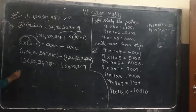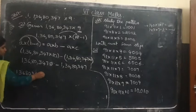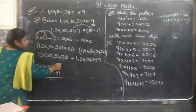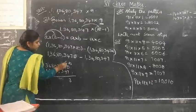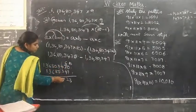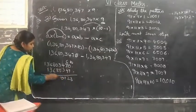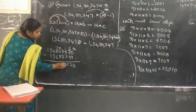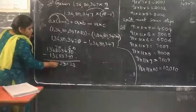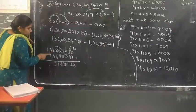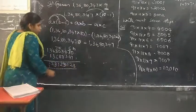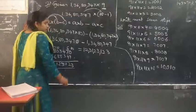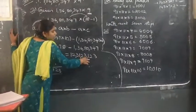Now subtract these two values: 13,68,03,470 minus 1,36,80,347. Working through: 10 − 7 = 3; 6 − 4 = 2; 4 − 3 = 1; 3 − 0 = 3; from 0 you can't take 8 so borrow — 10 − 8 = 2; 7 − 6 = 1; 6 − 3 = 3; 3 − 1 = 2; and 1 as it is. The result is 12,31,23,123.